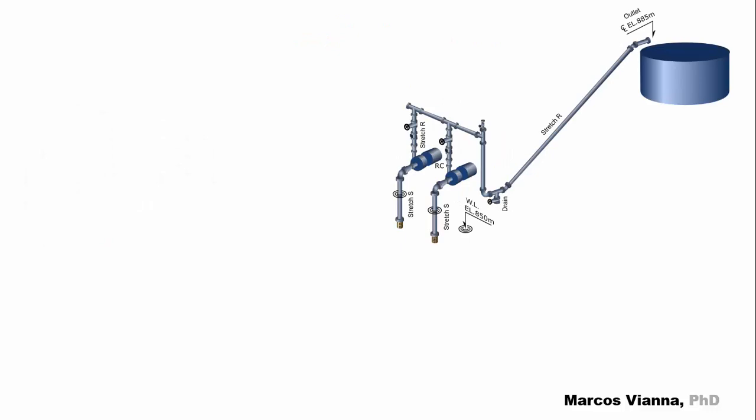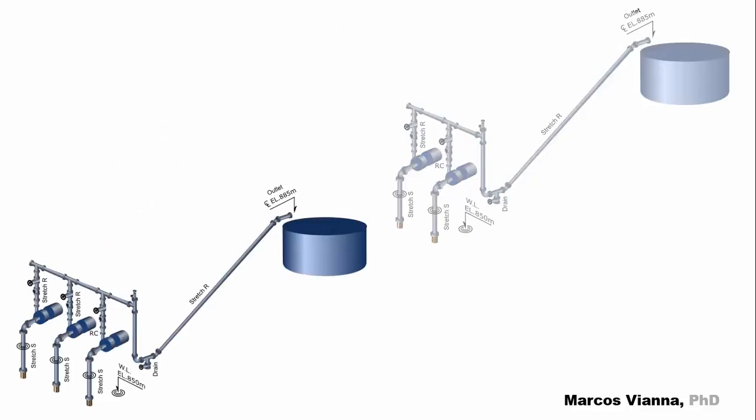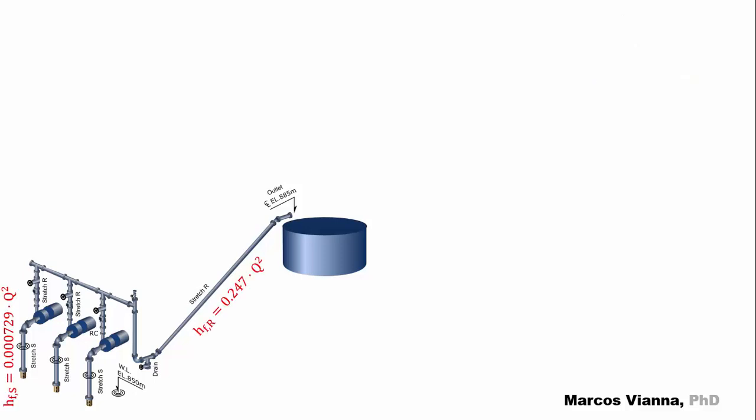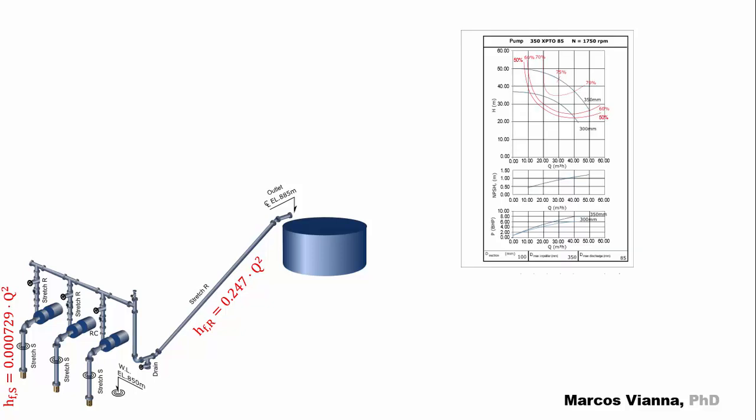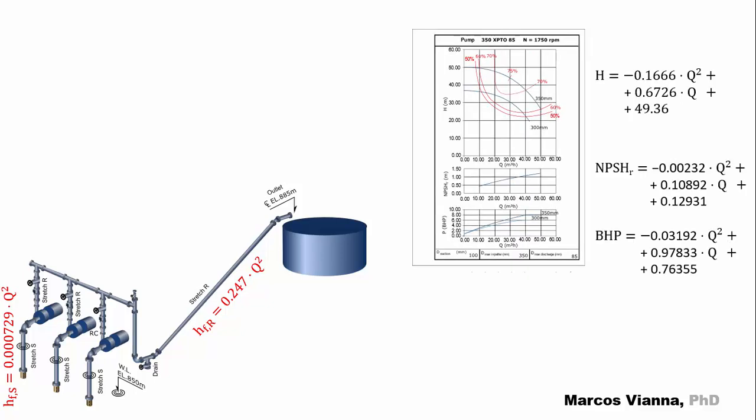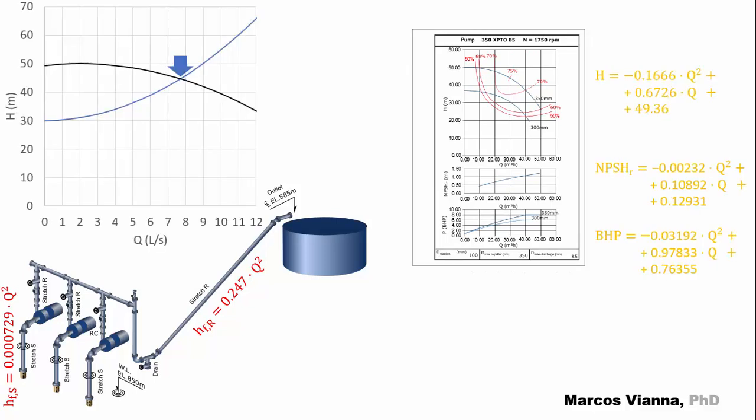But that's what happens when one pump runs alone. Let's see what happens when there's another pump in parallel at the installation. Notice that a third one is installed for standby. Again, we know these equations. And of course, we have the pump chart and equations for the head, required NPSH and BHP. Here are the characteristic curves of one pump and the system. The crossing point is the operating point.